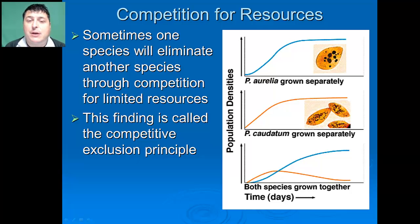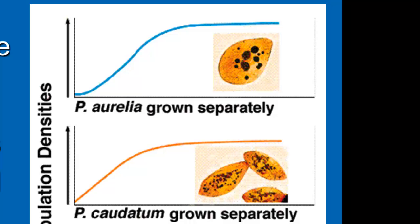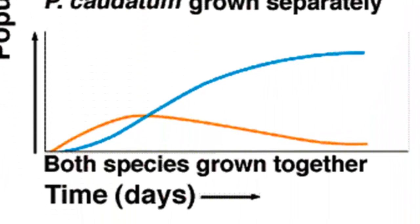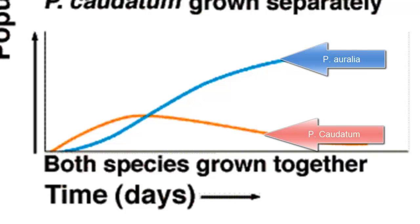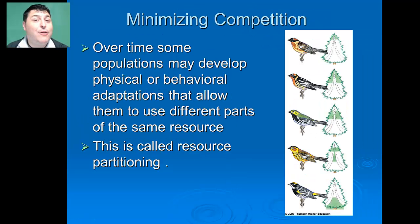It is observed readily when we look at the interactions between two populations of parameciums, P. aurelia and P. caudatum. Grown separately, they're able to grow and survive quite well. But once they're put together, there's going to be competition for the resource that they share. As a result, P. aurelia seems to be more capable of competing for that resource, and so P. caudatum is excluded. That's the competitive exclusion principle.